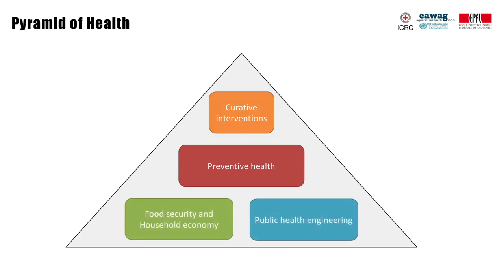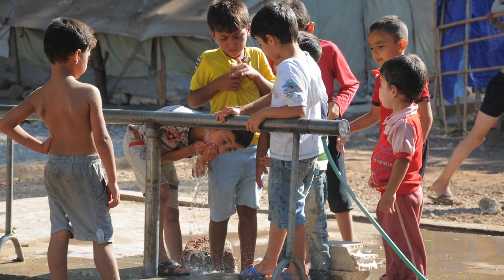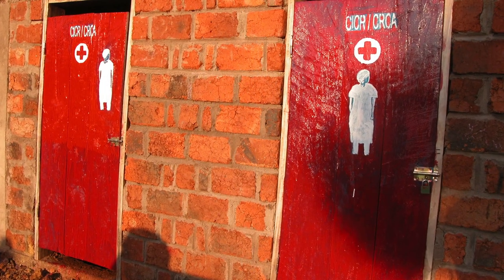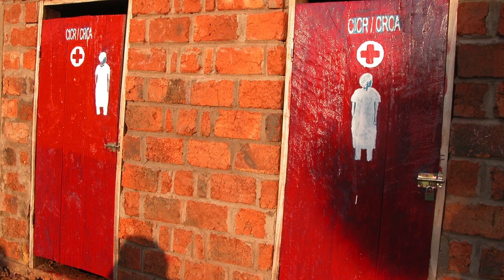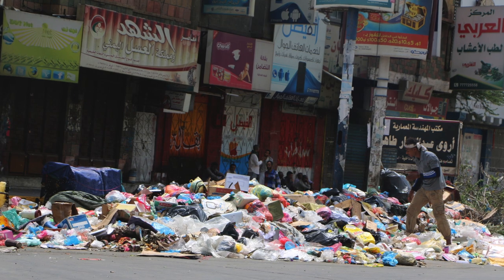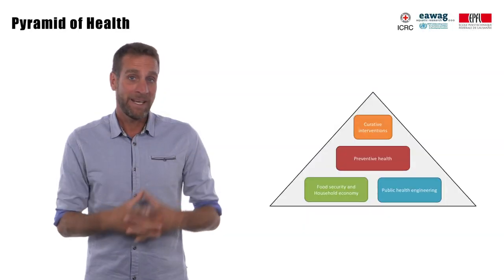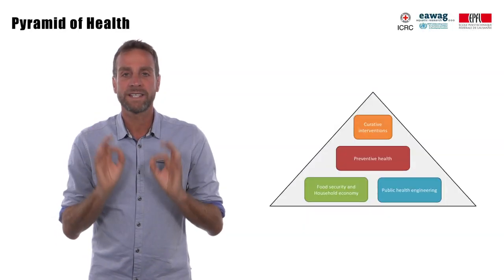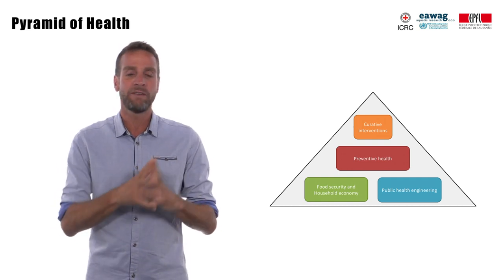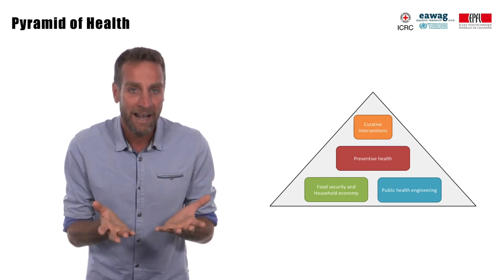At the foundation of the pyramid are two key building blocks: nutrition and public health engineering, which in humanitarian contexts aim to provide an adequate drinking water supply, proper excreta management, runoff and wastewater disposal, collection and disposal of refuse and medical waste, and effective vector control interventions. The idea behind the pyramid of health is that it makes no sense to manage health issues of vulnerable people only from the top, with medical curative care, if their immediate environment is the cause of their unhealthy state.